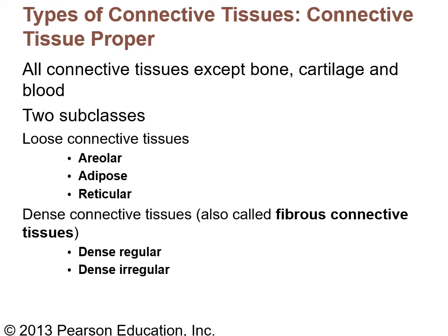Types of connective tissue proper — this contains every type of connective tissue except bone, cartilage, and blood. There are two subclasses: loose connective tissue and dense connective tissue. The cell type for both is the fibroblast. Under loose connective tissue are areolar, adipose, and reticular. Under dense connective tissue are dense regular and dense irregular, both of which have collagen fibers as the major fiber type.